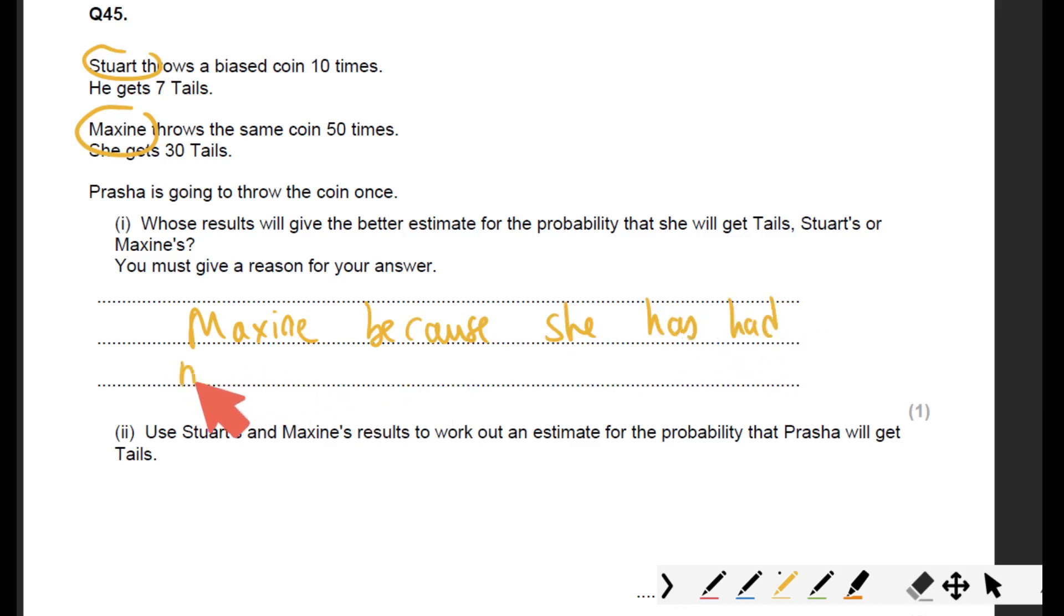Obviously if somebody just throws a coin once and it lands on tail, that person can't assume that it's going to land on tails every single time. The more experiments you do, the more accurate your knowledge is about what's happening.